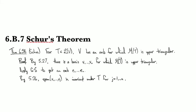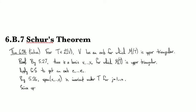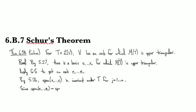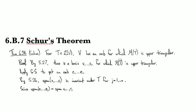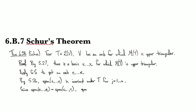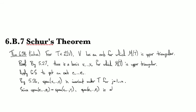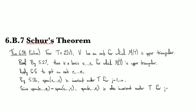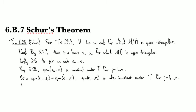From our previous result, we saw that the span of the eⱼ's is equal to the span of the vⱼ's all the way through. So those spans are also invariant under T all the way through. But then that same theorem, 5.26, says that if all these spans are invariant, then the matrix of T is upper triangular. So we can use the theorem both ways.